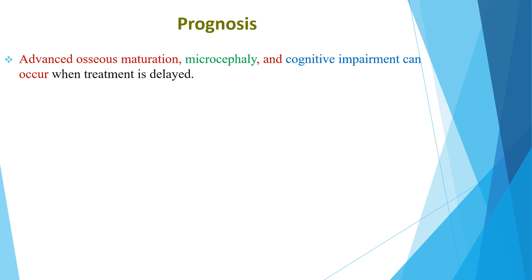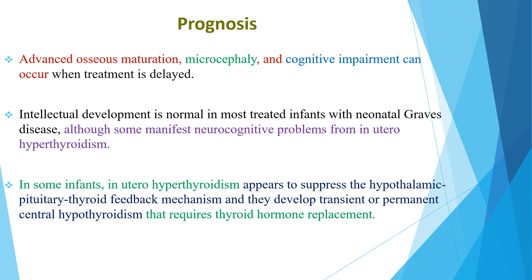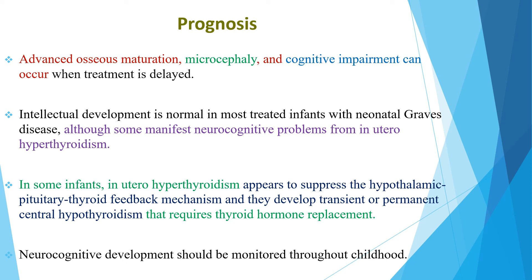Regarding the prognosis of neonatal Graves disease, advanced bone maturation, macrocephaly, and cognitive impairment can occur when treatment is delayed. Intellectual development is normal in most treated infants, although some manifest neurocognitive problems from in-utero hyperthyroidism. In some infants, in-utero hyperthyroidism appears to suppress the hypothalamic-pituitary-thyroid feedback mechanism, leading to transient or permanent central hypothyroidism requiring thyroid hormone replacement. Neurocognitive development should be monitored throughout childhood.